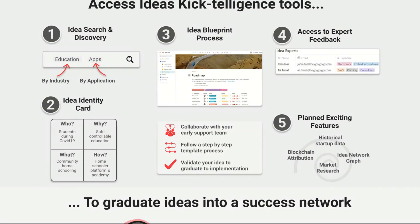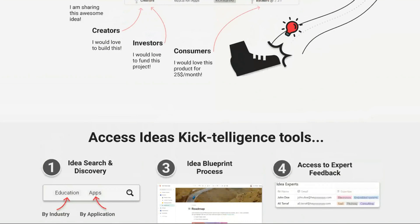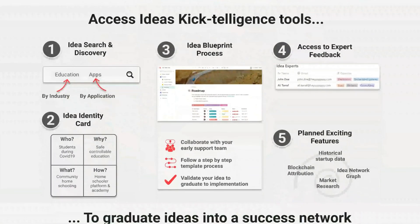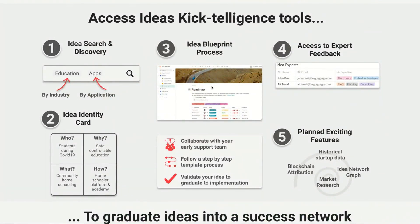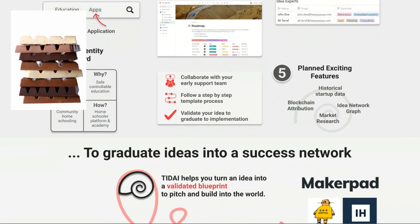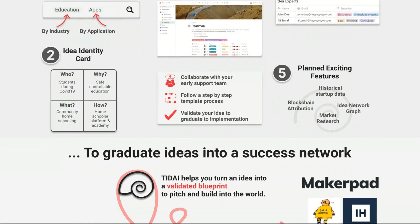The features include identity of the idea, blueprint process, etc. This is the features section — what you get for signing up. Not only do you get the part about gathering information for your idea, but you also get the platform features. I can see you're showing some screenshots, but the layout feels a bit messy. You have idea search and discovery by industry, by application, idea identity card, idea blueprint process. I'd like to think of this as bullet points in order — one under the other — each with an image, some text, and a one-sentence explanation.